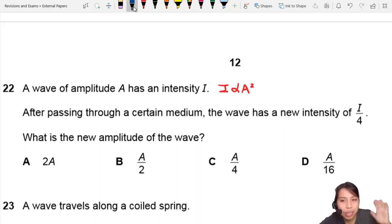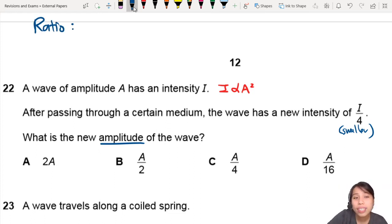After passing through a medium, now it has a new intensity of I over 4. So this is now smaller, reduced already. What is the new amplitude of the wave? This smells like a ratio question. So ratio is your best friend in here.